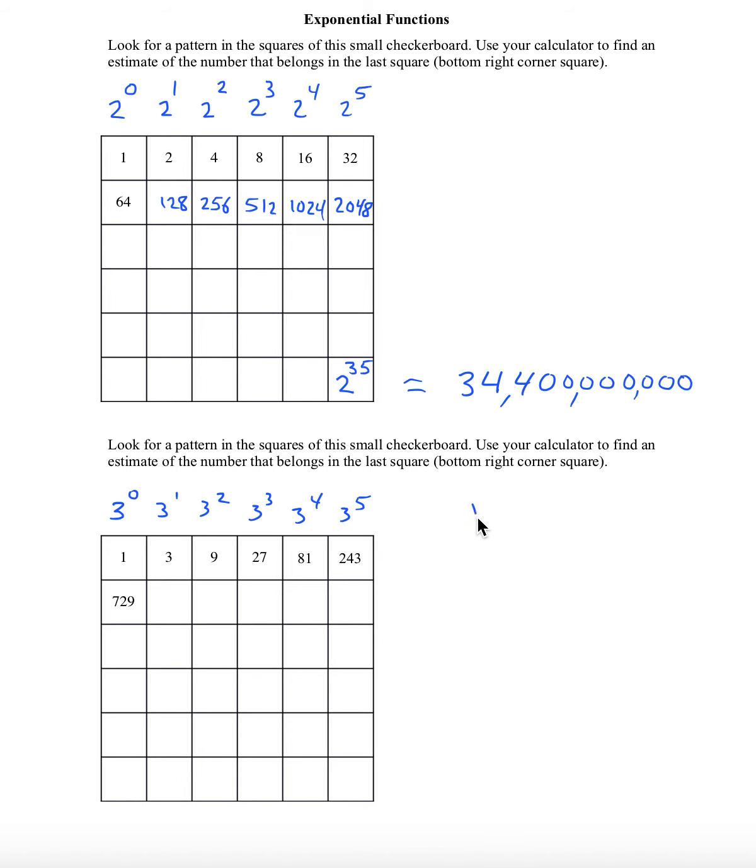So if we want to write this in function notation, then what we have is what's called an exponential function: y of x equals 3 to the x, where x represents the number of the checkerboard square. But we'll start with the first square being a 0, of course. What would the function have been above? y of x equals 2 to the x. These are exponential functions.